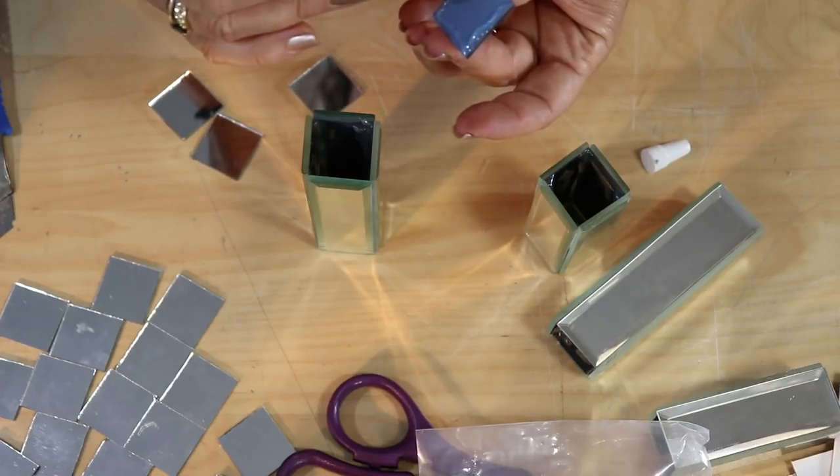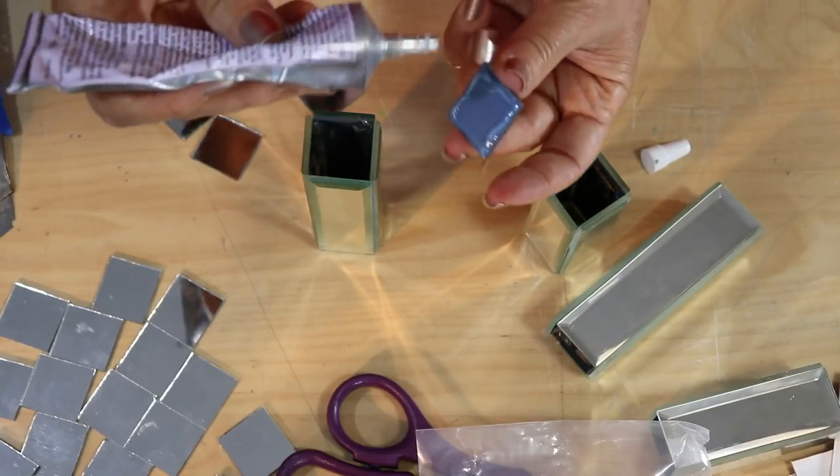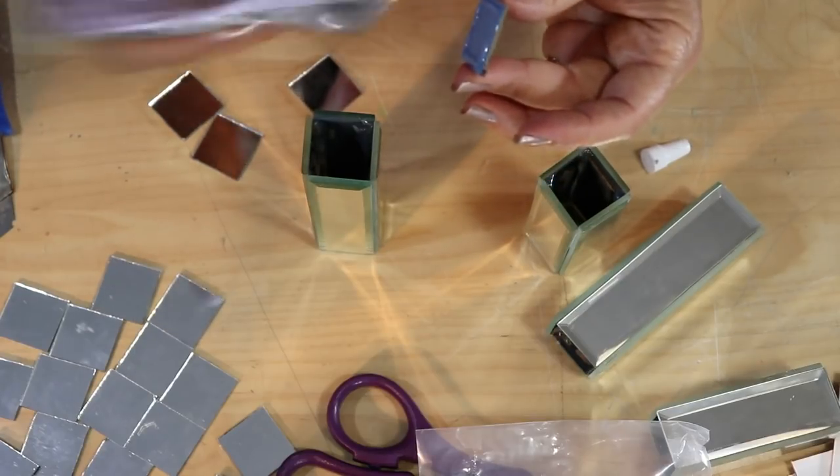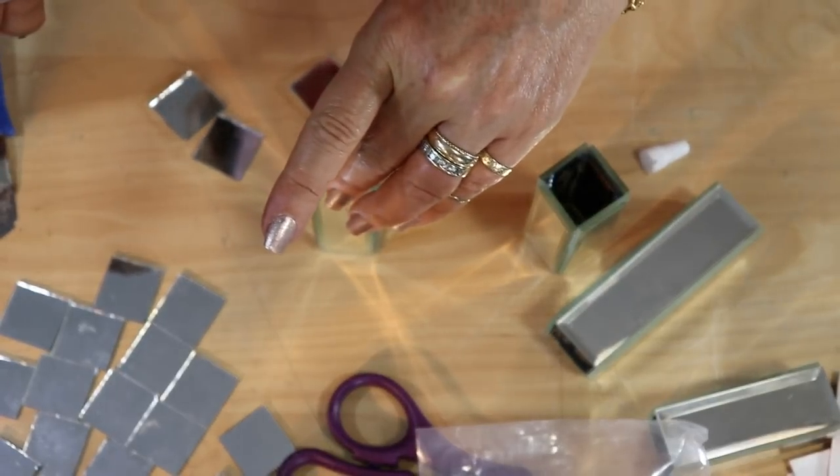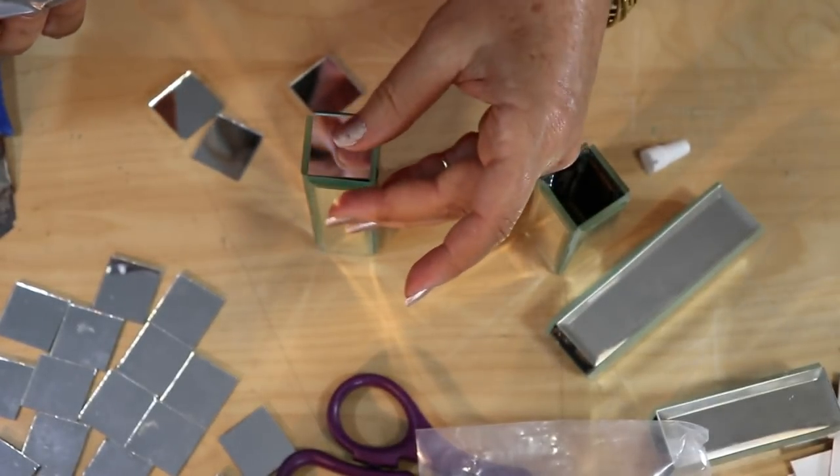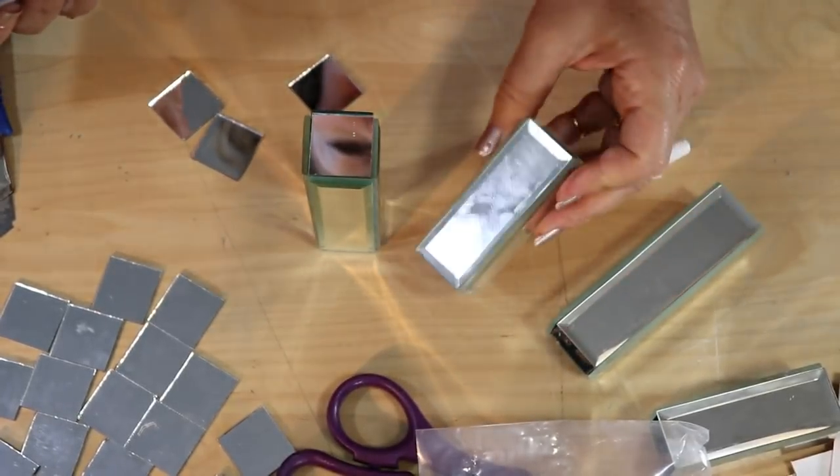I'm putting it on the mirror itself, on the back of my little mirror square, and then I'm just going to place it on there. You're going to be doing this on your taller mirror cubes, not your shorter ones. So you want to do it on the ends of your tall ones.